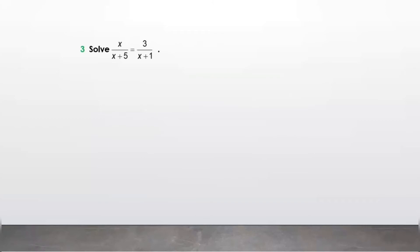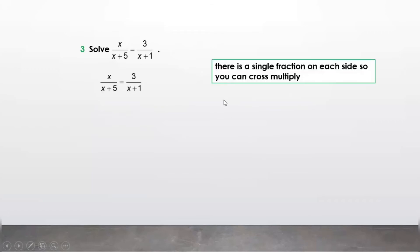Let us solve another question — here solving means finding the value of x. The denominators are single fractions on both sides, so we will cross multiply. Cross multiplying means multiplying x by (x plus 1) on one side and 3 into (x plus 5) on the other.